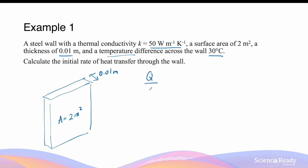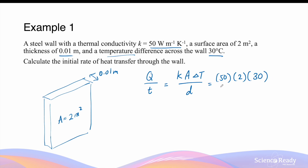The initial rate of heat transfer is equal to K times A times the change in temperature, divided by the distance between them. K is given as 50, A is 2 meters squared, the change in temperature is 30 degrees Celsius, and D is 0.01 meter. This gives a rate of energy transfer of 3.0 times 10 to the power of 5 joules per second.